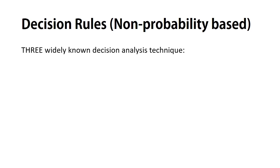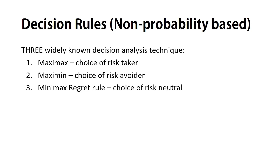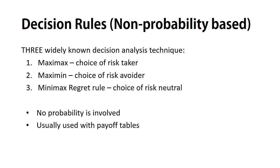Considering three different types of attitudes, we can relate three different types of decision makers to each attitude. The first is Maximax, which is a choice of the risk taker. The second is Maximin, which is the choice of the risk avoider. And lastly, the Minimax Regret Rule, which is the choice of the risk-neutral person. As a reminder, these decision-making techniques do not involve probability factors and use payoff tables to solve the situation.